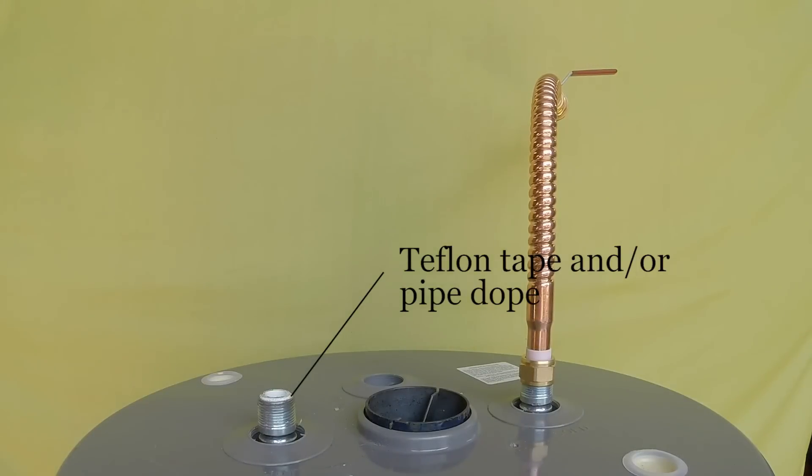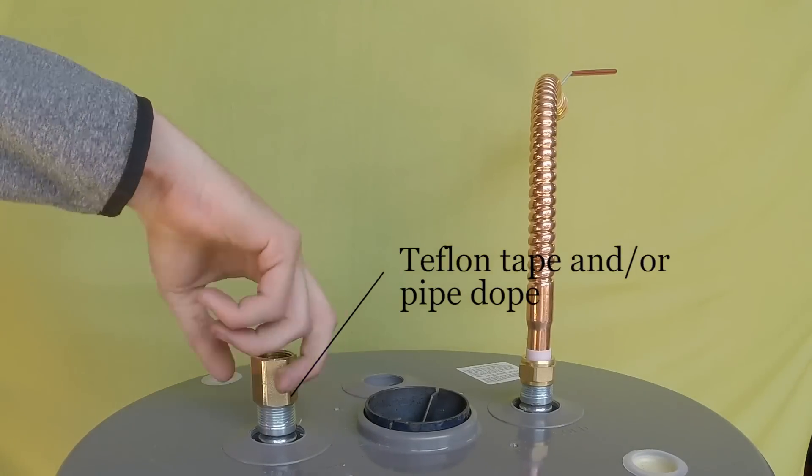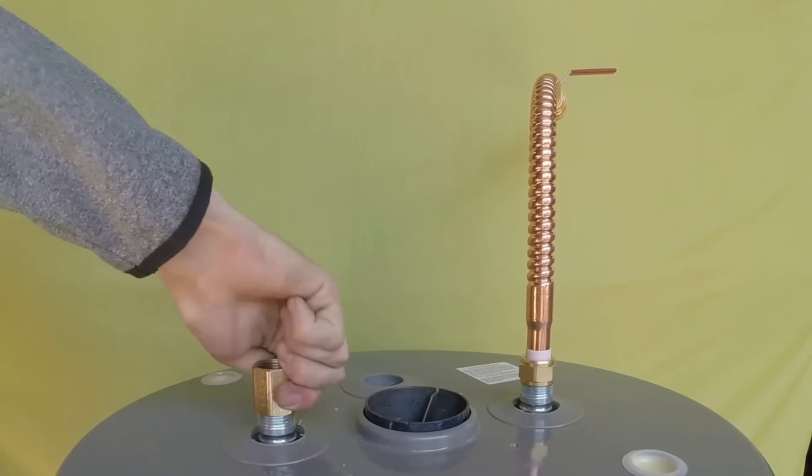Now wrap Teflon tape and or pipe dope around the hot water discharge nipple and screw on the three quarter inch coupling. Tighten with a wrench.